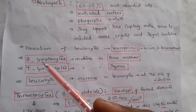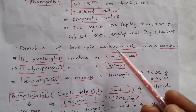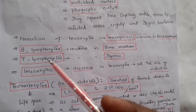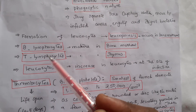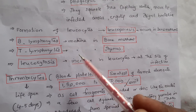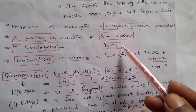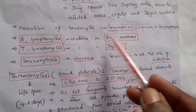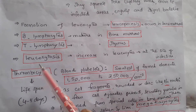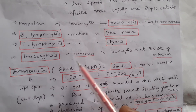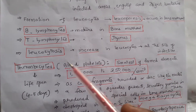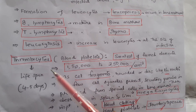Formation of leukocytes or WBCs is called leukopoiesis and occurs in bone marrow. B lymphocytes mature in bone marrow and T lymphocytes mature in the thymus — this is very important. Leukocytosis is the increase in leukocyte number, which is the condition at the site of infection.